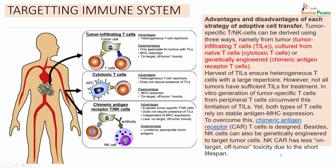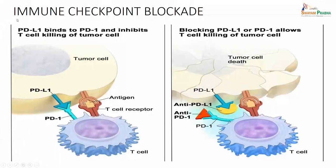But compared to the CAR T, the NK CAR has not been so successful mainly due to off-tumor toxicity and a shorter lifespan compared to the CARs. Now, let us look at a very important concept which is called the immune checkpoint blockade. This particular slide basically explains the mechanism and it is the very important concept behind the immunotherapy which is being very successful these days.